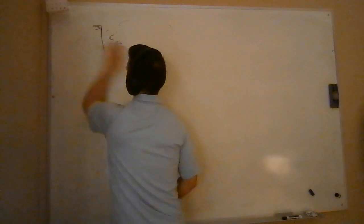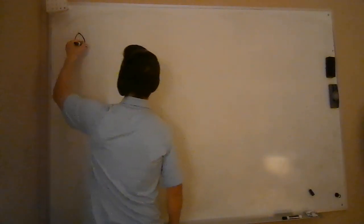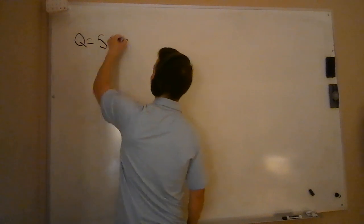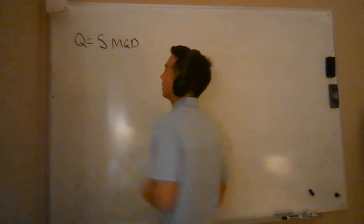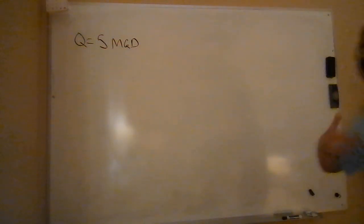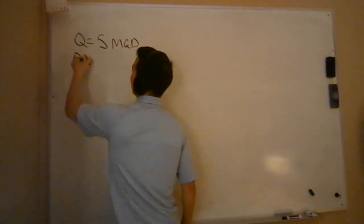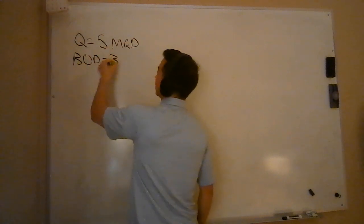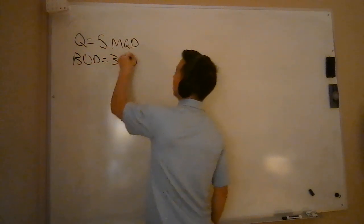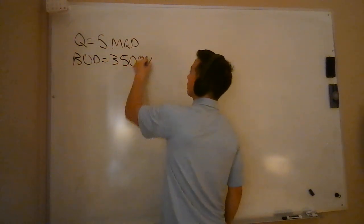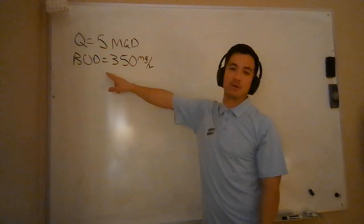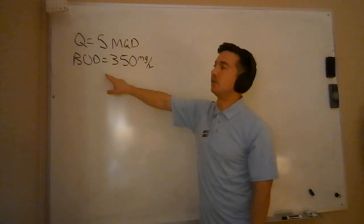So let's run some numbers. Let's look at a scenario where we are going to be calculating the FM ratio. So we've got a plant. Our plant flow is going to average 5 MGD, so a smaller plant. We are going to measure the amount of BOD. We're doing a BOD five-day test. We see that our BOD in this case is, we'll just say an average of 350 milligrams per liter. Remember, is BOD food or is it microorganisms? It's food.